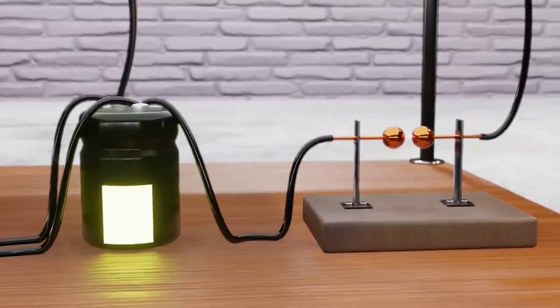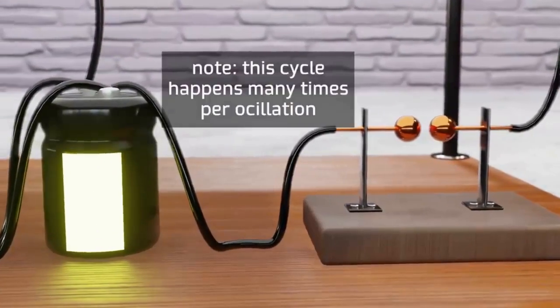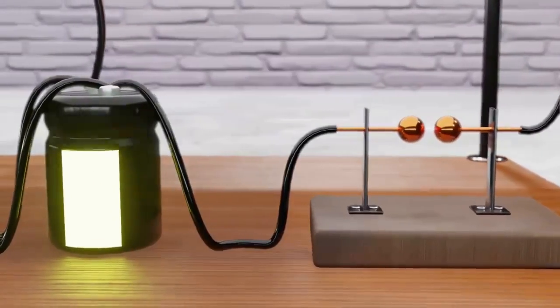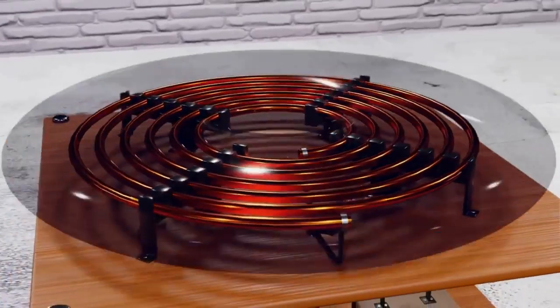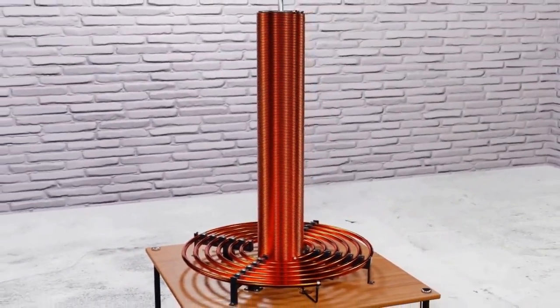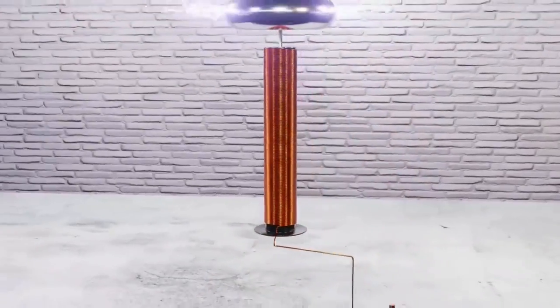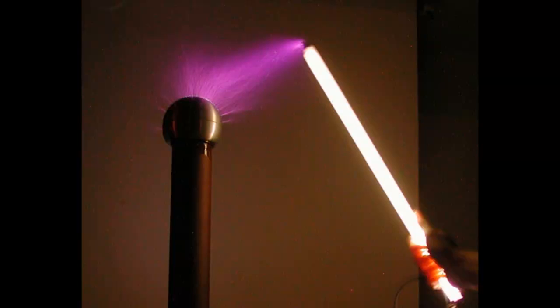What sets the Tesla coil apart is its ability to create spectacular electrical discharges known as streamers or sparks. These discharges occur at the top terminal of the coil, forming arcs of electricity that can extend several feet into the air. The distinct humming and crackling sound, along with the vivid light display, make Tesla coils both captivating and visually striking.